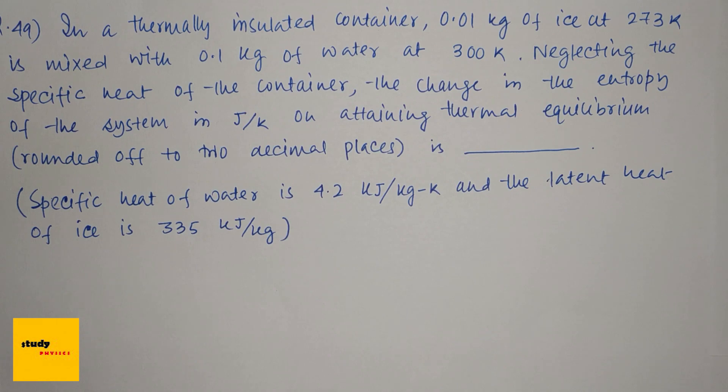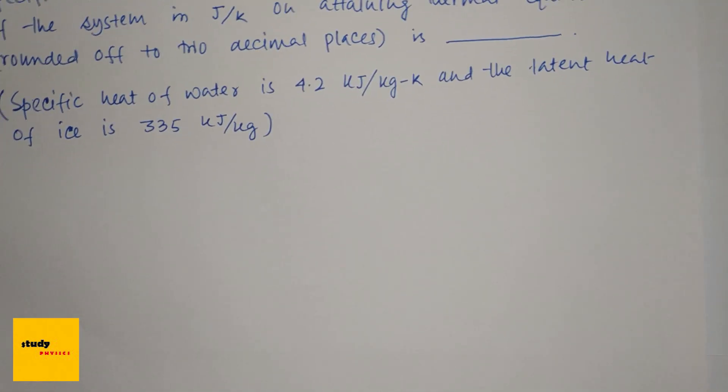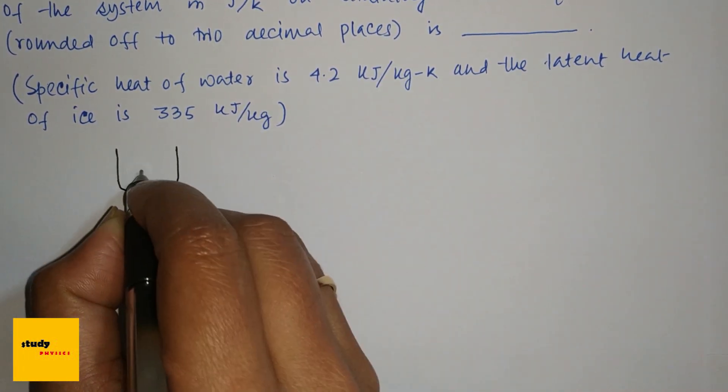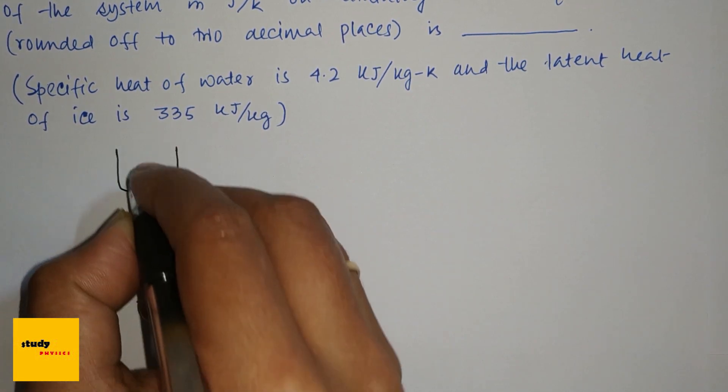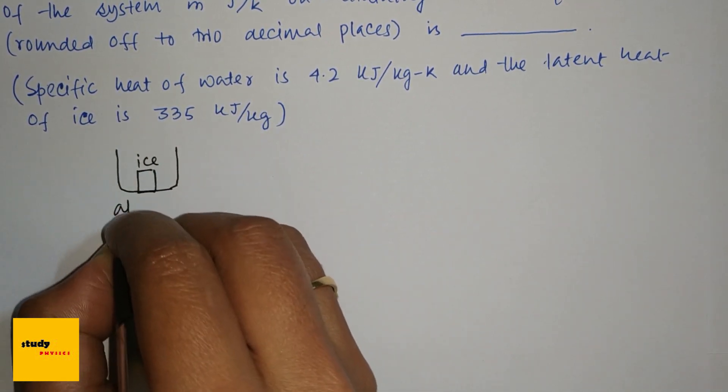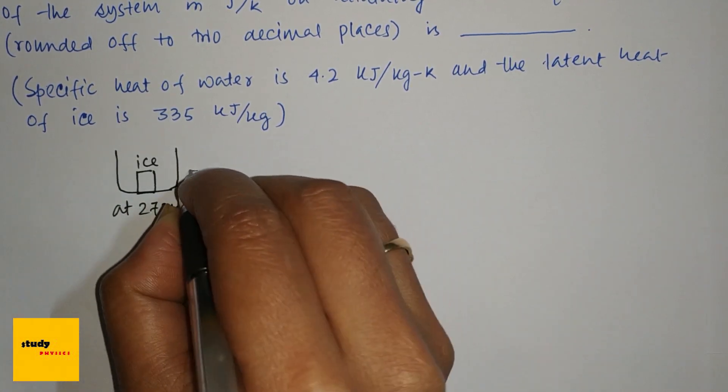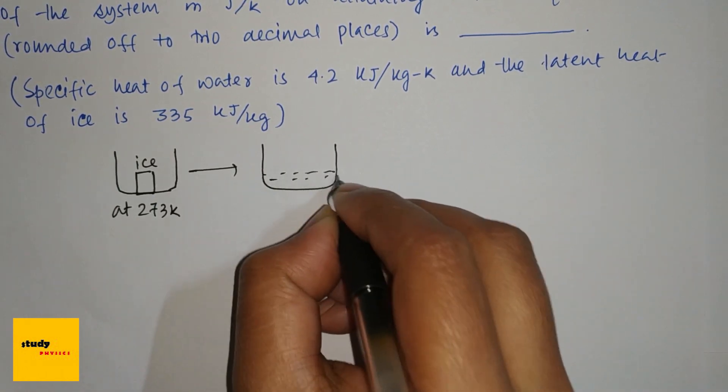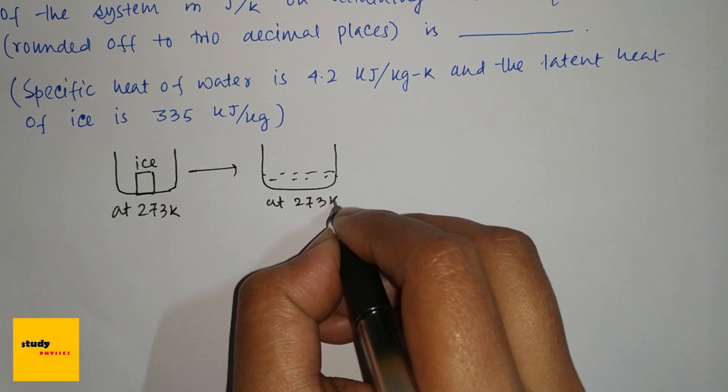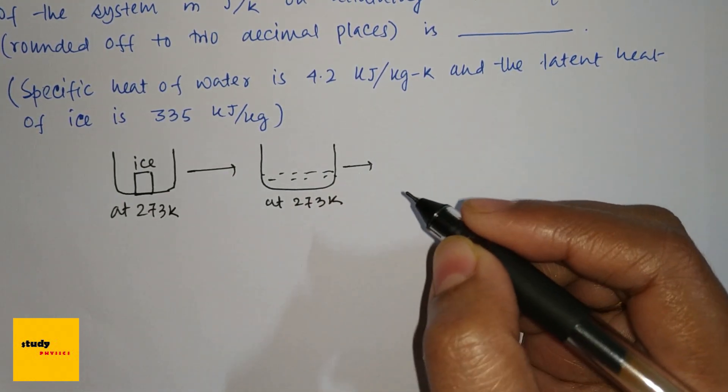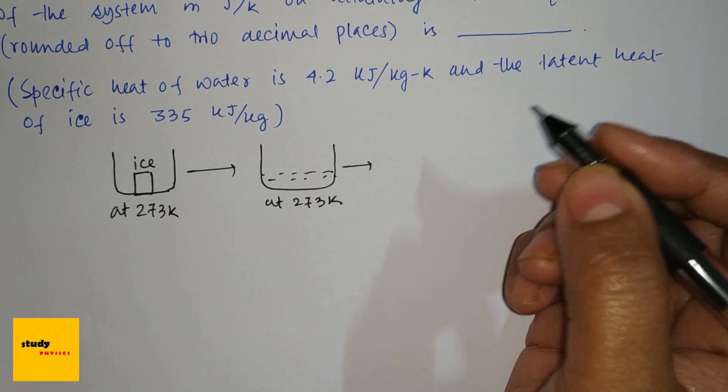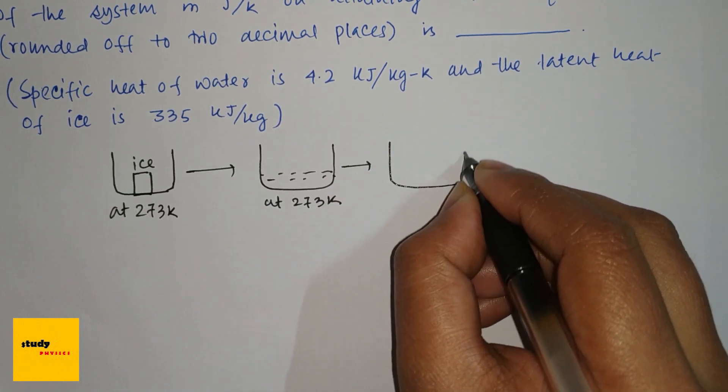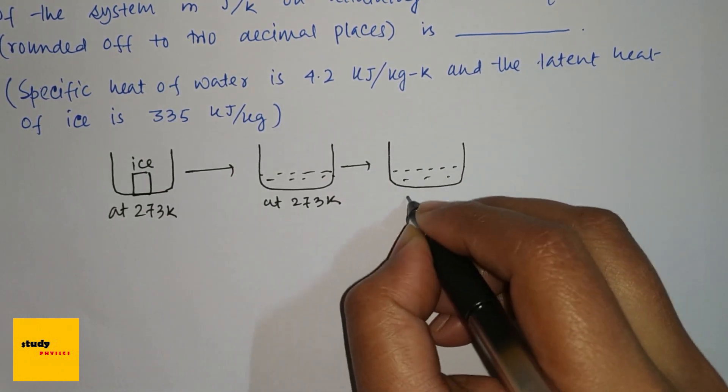So first, if this is our ice at 273 Kelvin, this will transform into water first at 273 Kelvin. And if it's mixed up with water at 300 Kelvin, that means it is heated to final temperature T. So this is water at final temperature T.